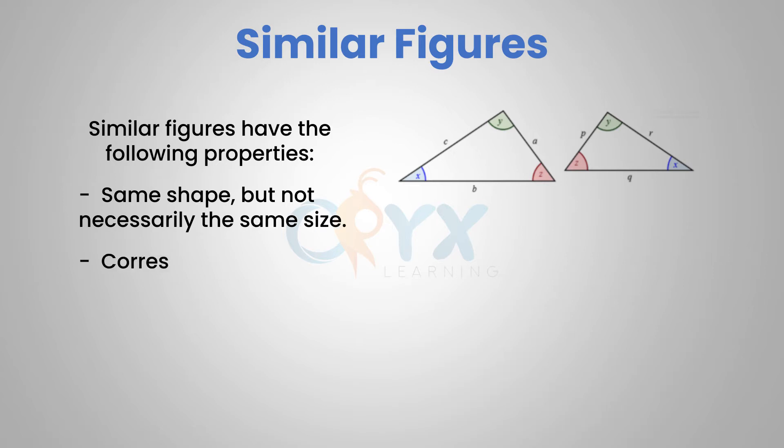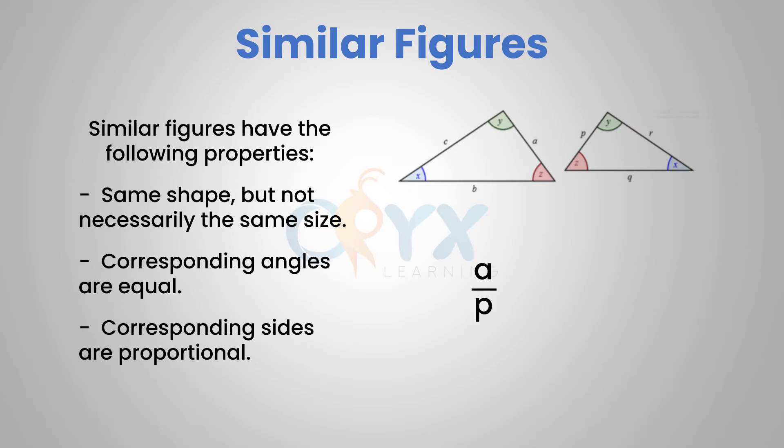Their corresponding angles are equal and their corresponding sides are proportional. Setting up the proportion given the triangle shown, we would have A over P equals B over Q equals C over R.